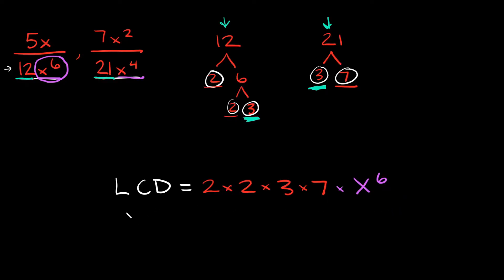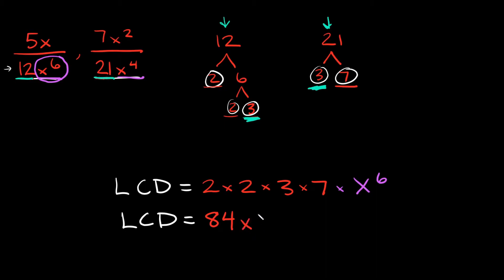So we simplify the LCD: 2 times 2 is 4, 4 times 3 is 12, and 12 times 7 is 84. Then we just have x to the 6th at the very end. So your LCD between these two denominators would be 84x to the 6th.